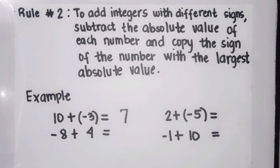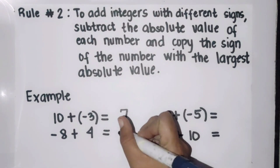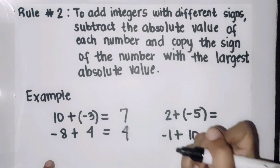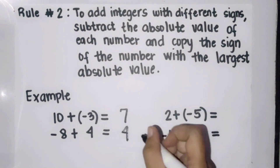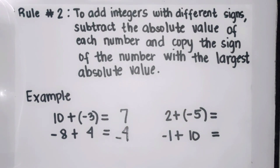Second example: negative eight plus four. They have different signs — negative eight and positive four — so let's proceed to subtraction. Eight minus four is four. Since negative eight has the larger absolute value, our final answer should copy its sign, which is negative. Therefore the answer for this example is negative four.